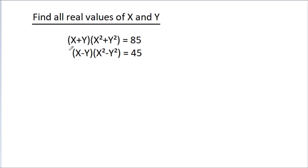In this video, we have given that (x+y) times (x² + y²) is equal to 85, and (x+y) times (x² - y²) is equal to 45. Then we have to find all real values of x and y.